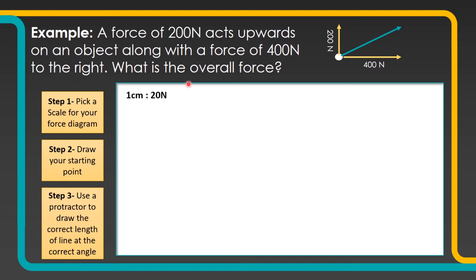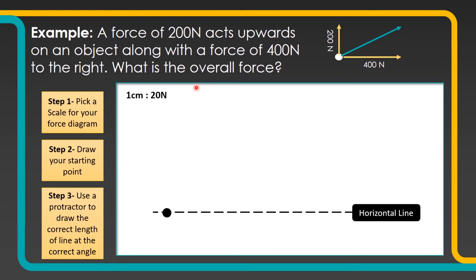The scale I'm going to pick this time is 1 centimetre to 20 newtons, because I'm going to draw a 400 newton force — that's quite large, so I need a suitable scale to fit it onto my piece of paper. I've drawn my horizontal line and my starting point. This time my starting point is off to the left because my forces are going up to the right, so I've left myself enough space to draw them.